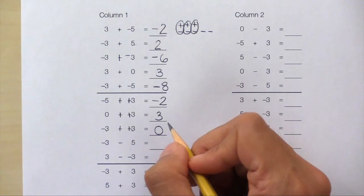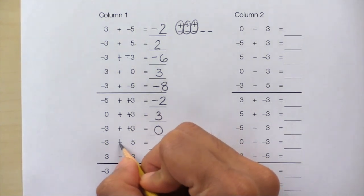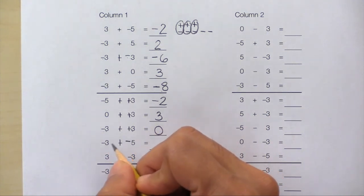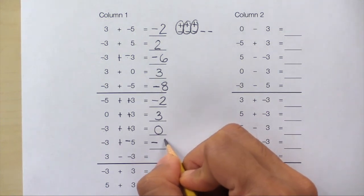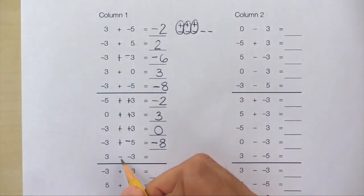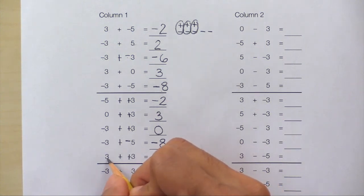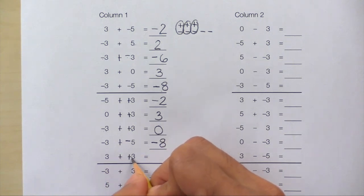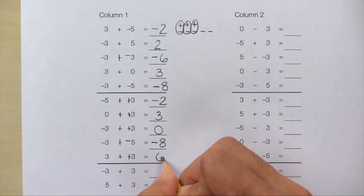Here's the next problem. Don't subtract integers — add the opposite. 1, 2 strokes. Same team or different team? They're on the same team — they're both negative. How many points do they have? They have 8 points. And finally, don't subtract integers — add the opposite. 1, 2 strokes. Positive 3 plus positive 3. Same team or different team? They're on the same team. How many points do they have? They have 6 points.